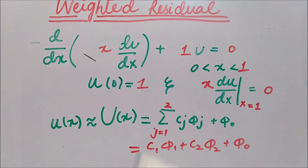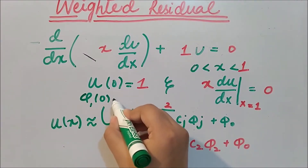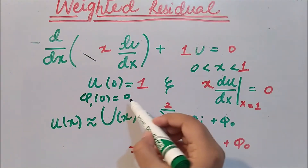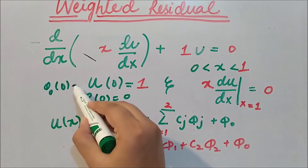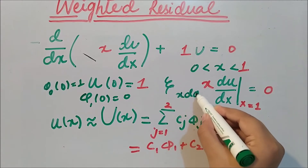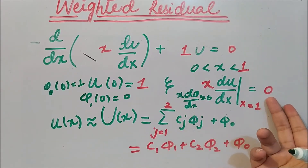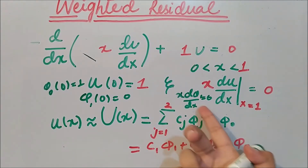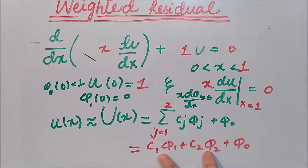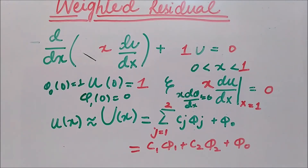Specifically, φ1(0) = 0 and φ2(0) = 0 for the homogeneous form, but φ0(0) = 1 to match u(0) = 1. For the natural boundary condition, x·(dφ1/dx) = 0 and x·(dφ2/dx) = 0, and similarly x·(dφ0/dx) = 0. There is no standard procedure for choosing these functions, so there are many valid possibilities.